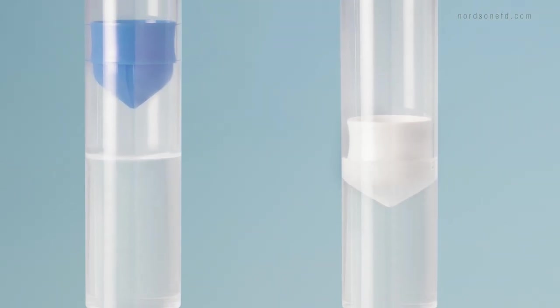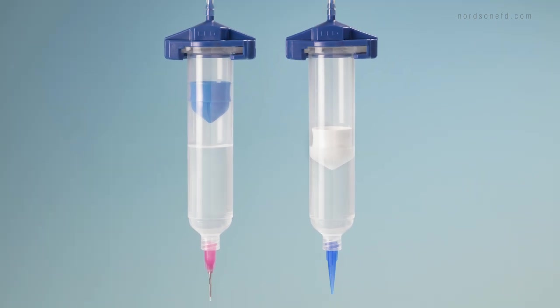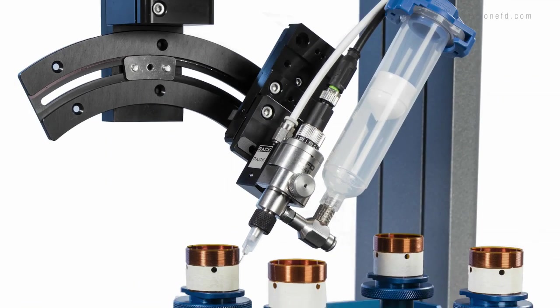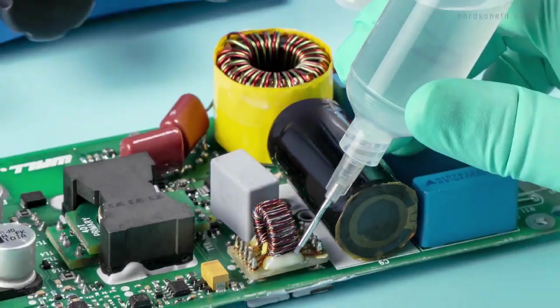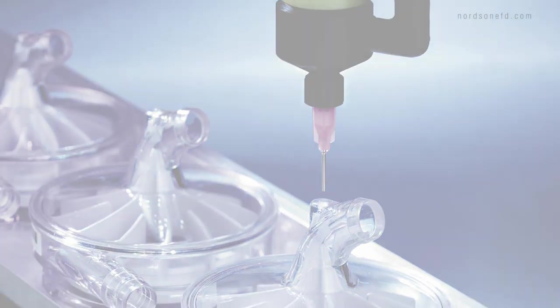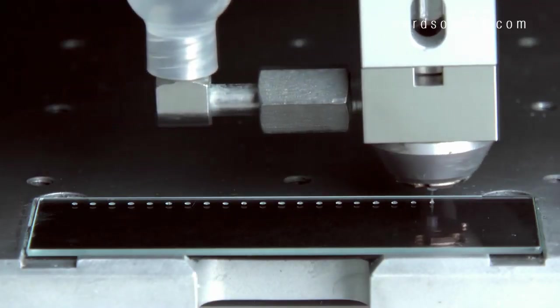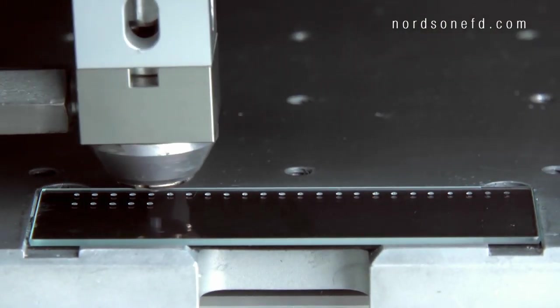Cyanoacrylates, also known as superglues, are moisture cure adhesives with high bond strength and fast cure times. While helpful for increasing throughput, CAs present unique dispensing challenges. In this video, we'll share 9 recommendations for trouble-free dispensing.